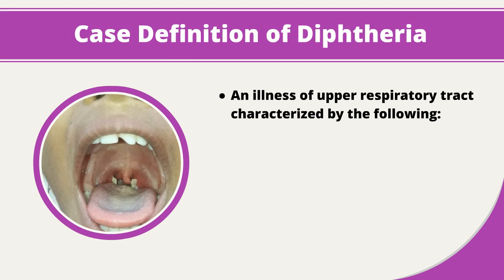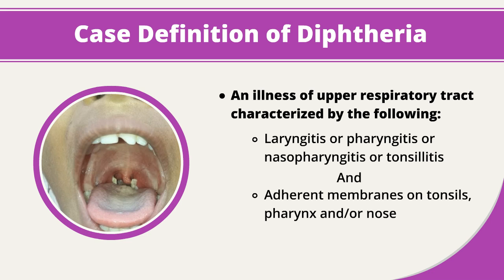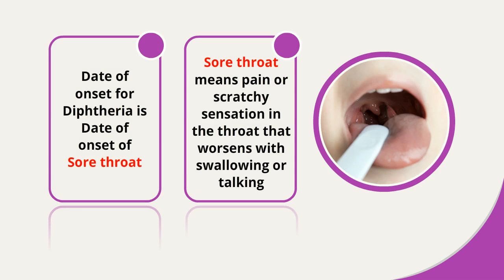Diphtheria is an illness of the upper respiratory tract characterized by laryngitis, pharyngitis, nasopharyngitis, or tonsillitis, and adherent membranes on the tonsils, pharynx, and/or nose. The date of onset for diphtheria is the date of onset of sore throat.